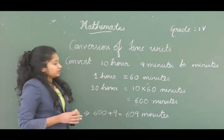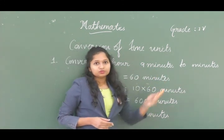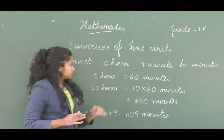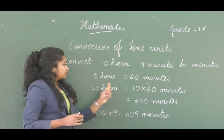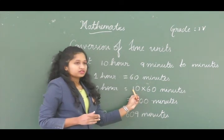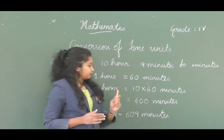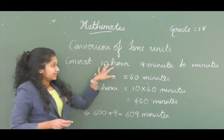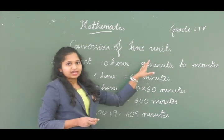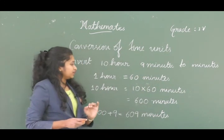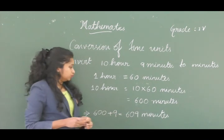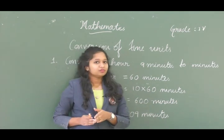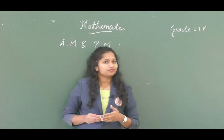Now let's convert 10 hours 9 minutes to minutes. One hour equals 60 minutes, so 10 hours equals 10 × 60 = 600 minutes. Adding the 9 minutes, 10 hours 9 minutes equals 609 minutes.